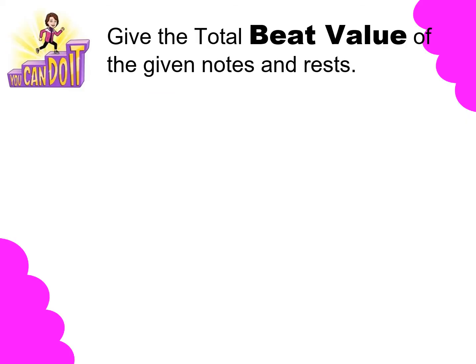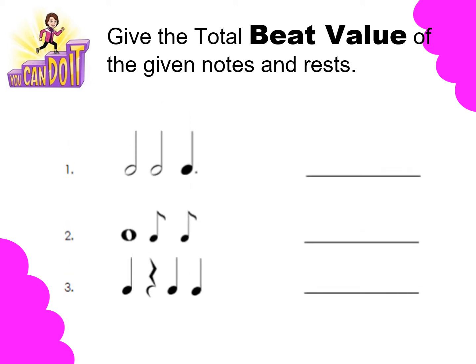Let's have another activity. You are just going to give the total beat value of the given notes and rests. Let us try to answer number 1, 2, and 3. For number 1, there are 3 given musical symbols. The first musical symbol is a half note. The second musical symbol is another half note.